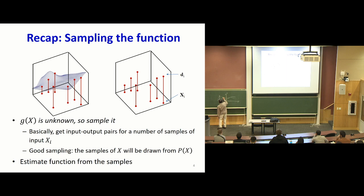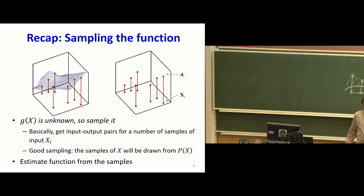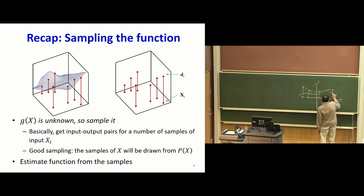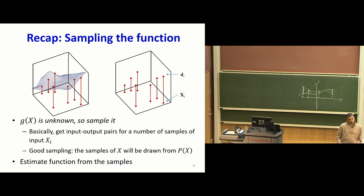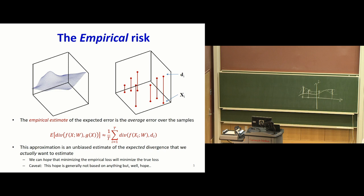Samples which are x, y pairs, where you get a certain number of samples of the input and the corresponding value of the function. And what we actually do is, rather than try to minimize this entire area, we will try to minimize the sum of the average value of these lengths. And if that average value goes down to zero, at least at those training points, the function is going to be a good fit. So the average that we get of these errors is a proxy for the entire area.